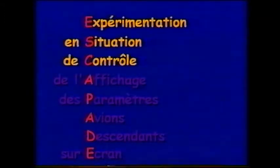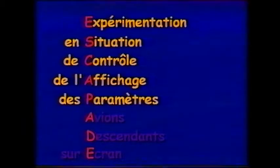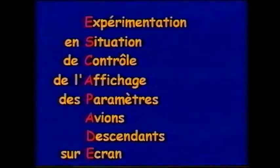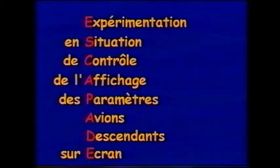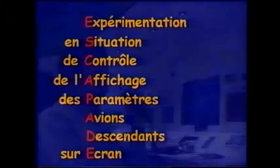Le projet ESCAPAD — expérimentation en situation de contrôle de l'affichage des paramètres avion-descendant sur écran — initié début 1996 par le CENA, le STNA et le SCTA, vise notamment à proposer et évaluer une solution simple pour améliorer le service de contrôle : l'affichage des paramètres avion-descendant sur l'écran radar du contrôleur.